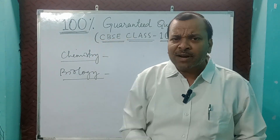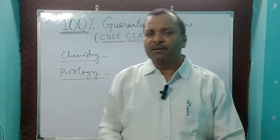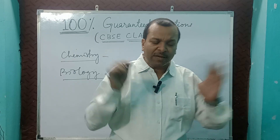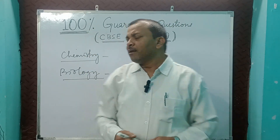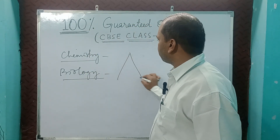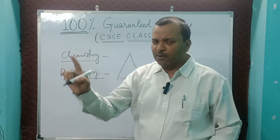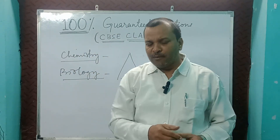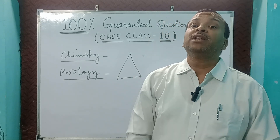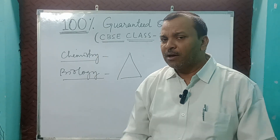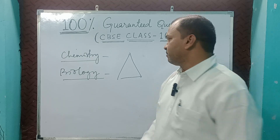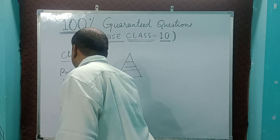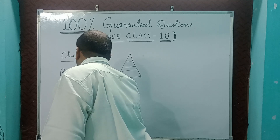Our environment is a very easy chapter. Go through food web, food chain, and trophic levels — 100 percent you are going to get one or two questions. 10 percent law and ozone layer depletion — go through them clearly. Next, come to the physics part.